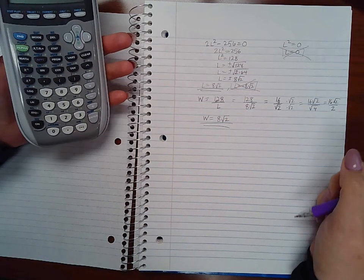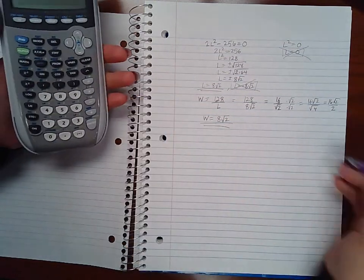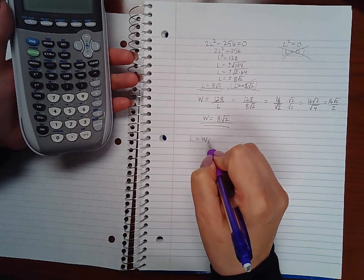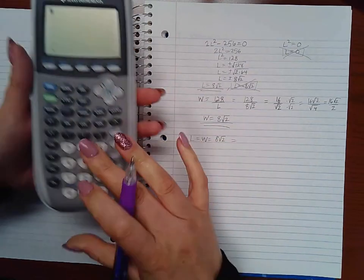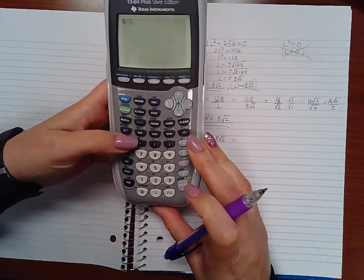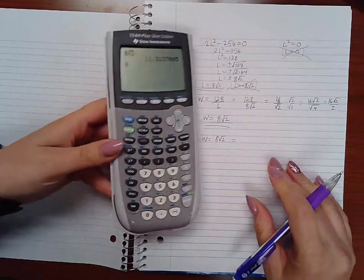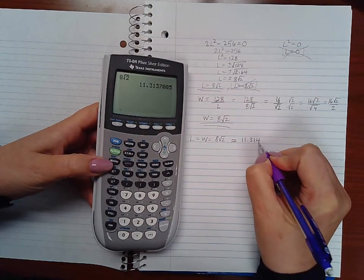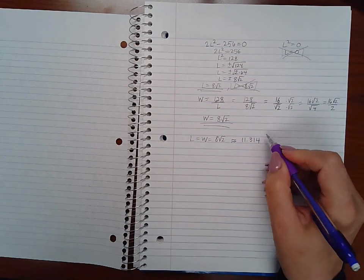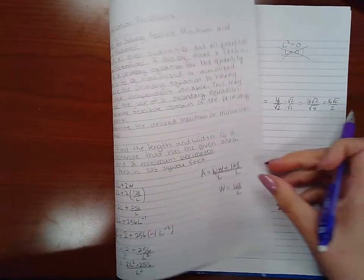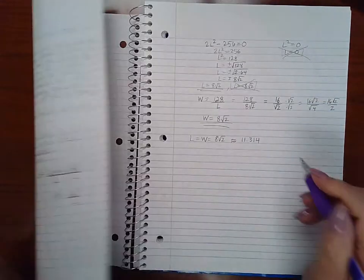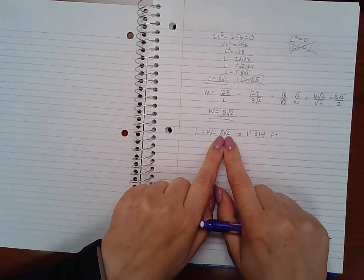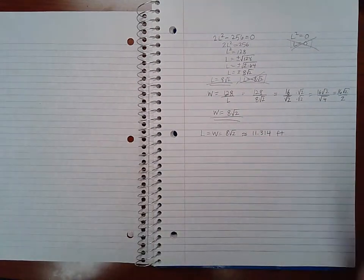So then you end up with your W equal to 8 square root of 2 as well. So what ends up happening is you end up with a square actually instead of a rectangle. These are feasible answers, so your length does equal your width, which equals 8 square root of 2. Now if your computer asks you to round your answer to so many decimal places, then you can just plug it in and say it's approximately 11.314 feet. So just be cautious of whether they want the exact answer or whether they're asking you for a rounded answer.